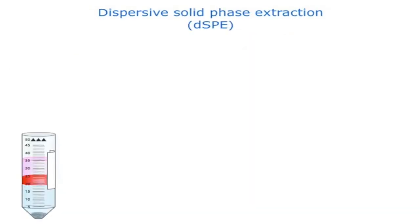The next step is dispersive solid phase extraction. Dispersive SPE reduces the concentration of fats, proteins, chlorophyll, and other matrix components.